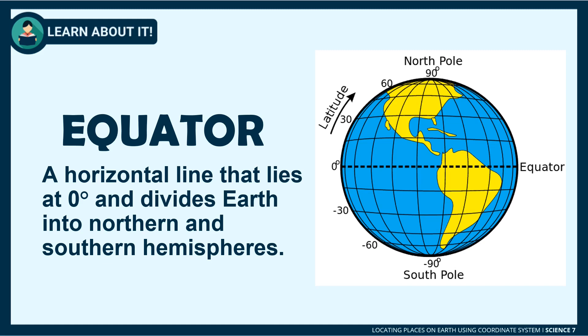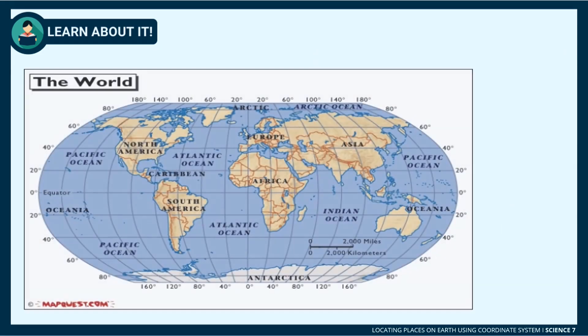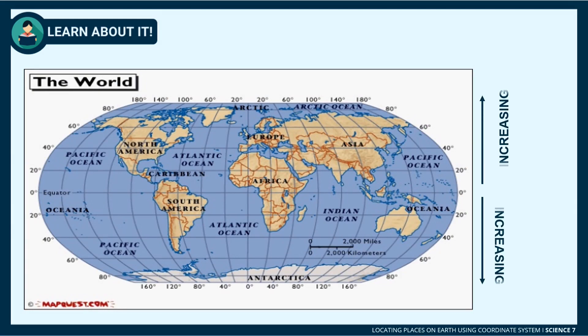The latitude which cuts the earth in half, dividing the northern and southern hemisphere, is called the equator. As a reference point, the equator is read as zero degrees latitude. The degree increases as it approaches the two poles, which are read as 90 degrees north latitude or 90 degrees south latitude.